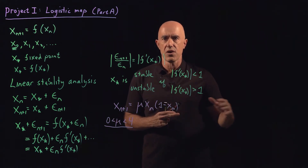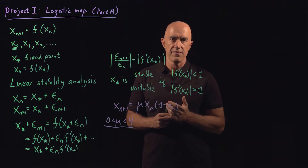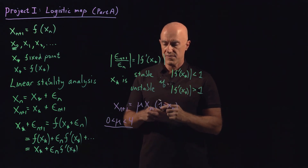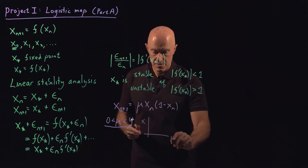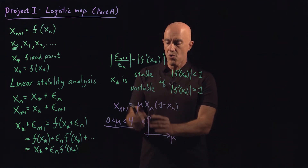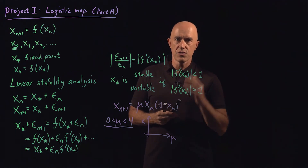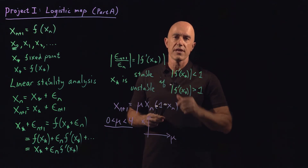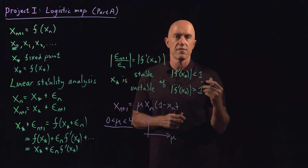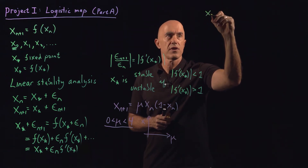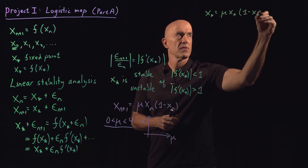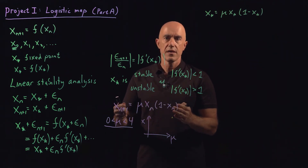As mu increases from 0 up to 4, we plot the iterates x versus mu in a graph, and that gives us the bifurcation diagram. For small values of mu, we'll have a fixed point, so it's useful to understand the fixed point behavior. To compute the fixed points of the logistic map, we solve x star equals mu times x star times (1 minus x star).